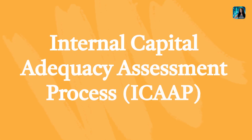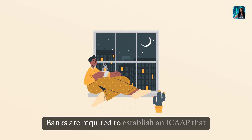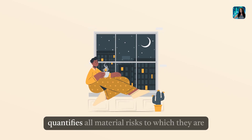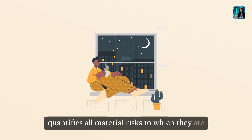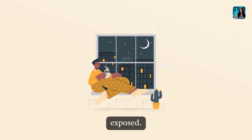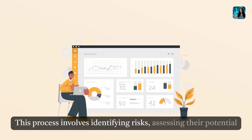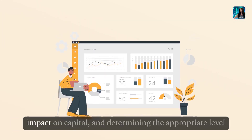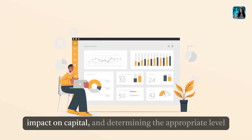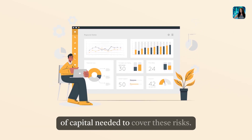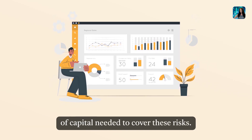Internal Capital Adequacy Assessment Process (ICAAP). Banks are required to establish an ICAAP that quantifies all material risks to which they are exposed. This process involves identifying risks, assessing their potential impact on capital, and determining the appropriate level of capital needed to cover these risks.